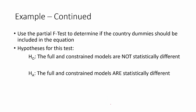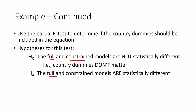We'll start with the null and alternative hypotheses. The null hypothesis will be that the full and constrained models are not statistically different — in other words, the country dummies don't matter. The full model will have the country dummies in it; the constrained model will not. If we reject the null, we're able to say the full and constrained models are statistically different from each other — in other words, the country dummies do matter.